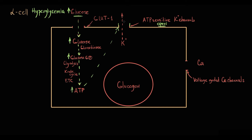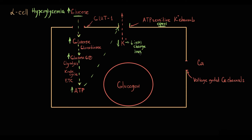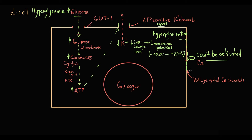Potassium ions have positive charge. The more potassium ions leave the cell, the fewer positively charged ions remain inside the cell. With decreasing positively charged ions inside the cell, membrane potential goes down — for example, from minus 70 to minus 80 mV. The cell becomes hyperpolarized. In a hyperpolarized state, calcium channels cannot be activated, so there is no induction of exocytosis, and glucagon secretion is impossible.